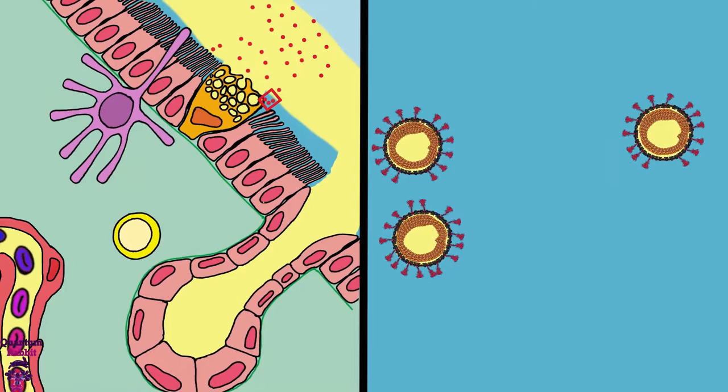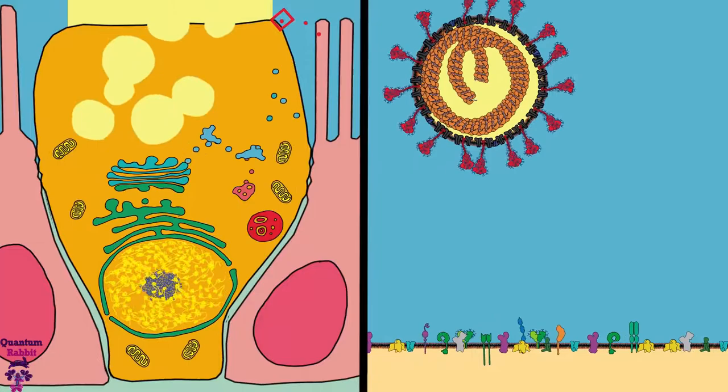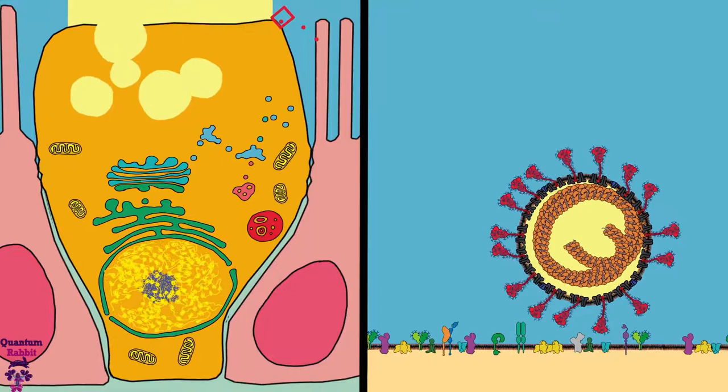In the last episode, three virions managed to survive the mucus barrier. They randomly moved towards the cells of the nasal epithelium and landed on a goblet cell. These cells produce mucus and the mucus proteins of the last episode.